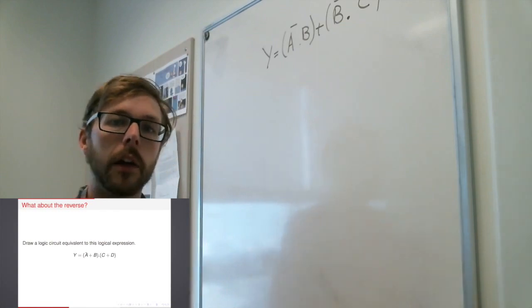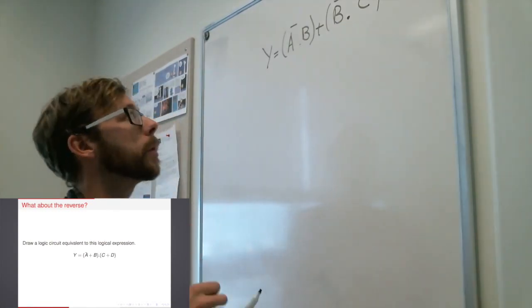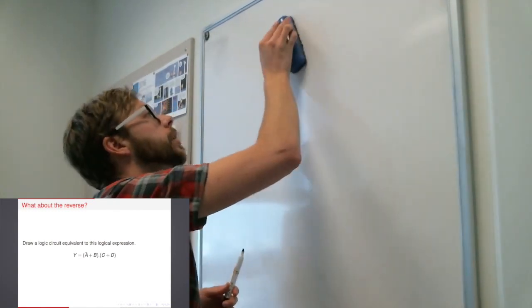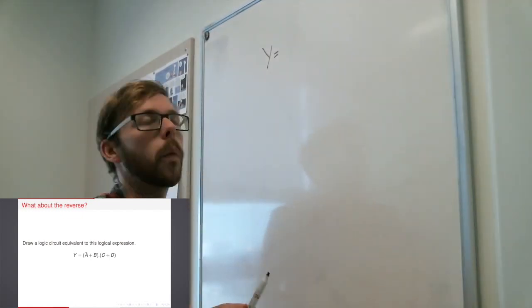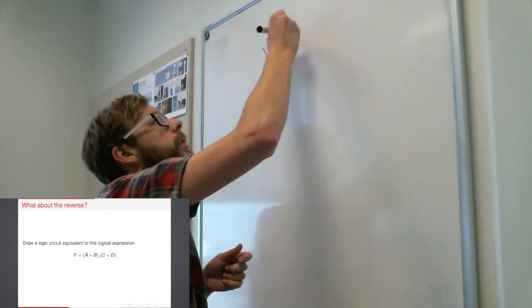What happens if we start with this and we have to build a circuit from it? And again, this has pretty clear parallels to actually building physical logic gate circuits. Because often you'll figure out a logical expression and then you'll have to build it yourself from scratch and figure out which gates to use and where.